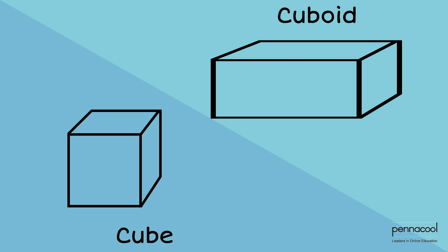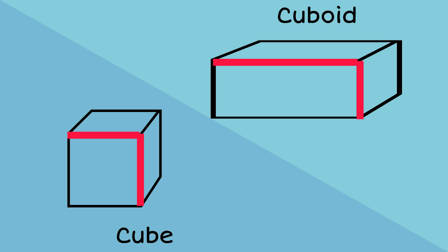Though cubes and cuboids are similar, they are slightly different. All the edges of a cube have the same length. A cuboid, on the other hand, has edges of different lengths.